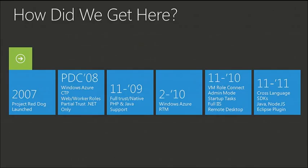One of the things we quickly realized as people started to use the platform is that they had lots of existing apps and components they wanted to bring onto the platform that they couldn't because our application model was so restrictive — essentially partial-trust ASP.NET. Over time, we started adding things to relax constraints and allow more code to be compatible with Windows Azure's PaaS. We added full trust and native code at PDC 2009, PHP and Java support, then we RTM'd. We also added VM Role Connect, admin mode, startup tasks, full IIS, and remote desktop. We call these features 'on-ramps' — from the existing world of Windows Server to the future world of platform-as-a-service in Windows Azure.